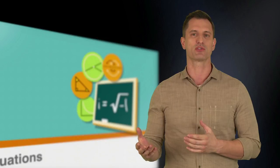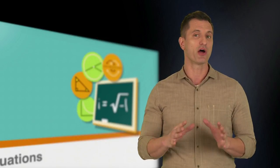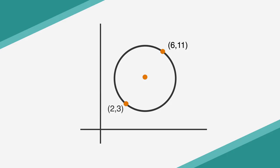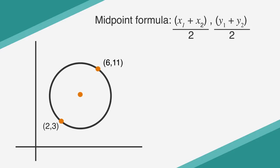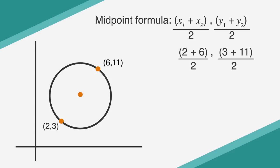We've learned how to find the center of a circle using its equation, but there's another way to find the center which might sometimes come in handy. If a question gives you two endpoints of a circle's diameter, you can use the midpoint formula to find the center. The midpoint formula is the average of the two x coordinates, comma, the average of the two y coordinates. So in this case, the center of the circle would be (2 plus 6 over 2, 3 plus 11 over 2), and we find that the center of this circle is (4, 7).